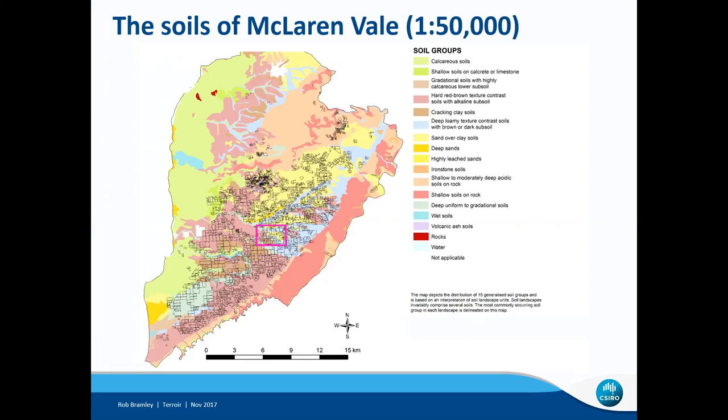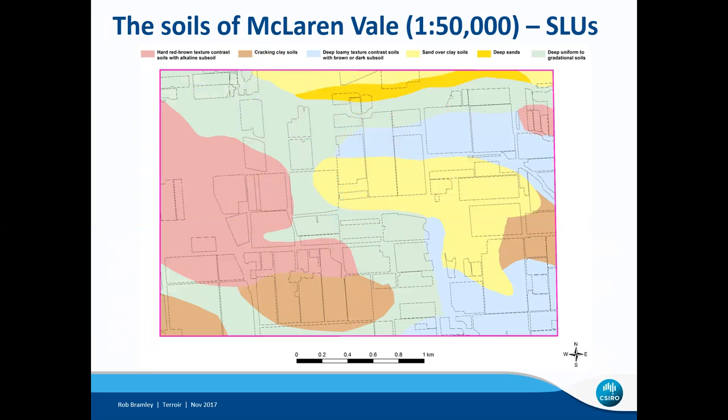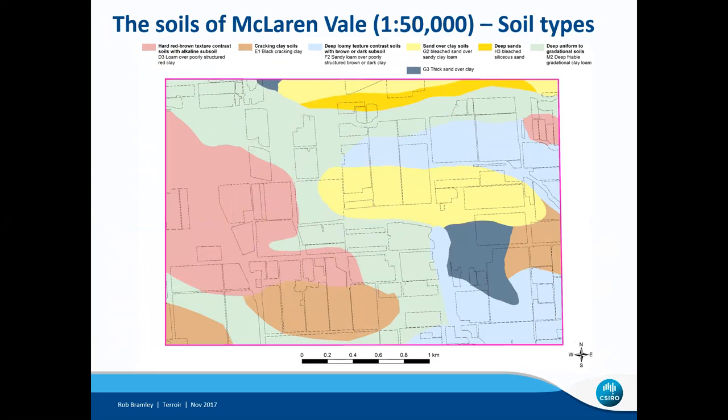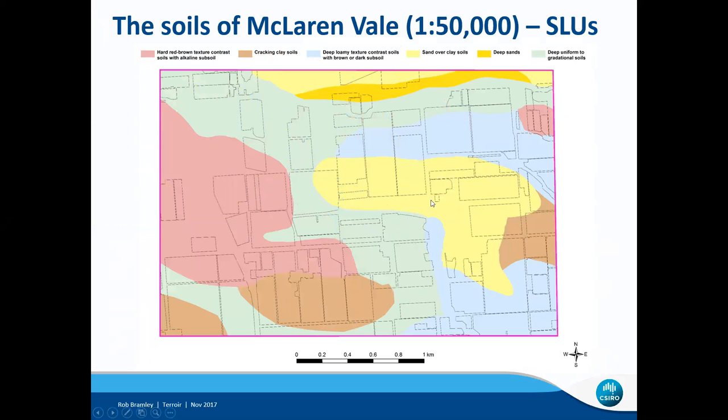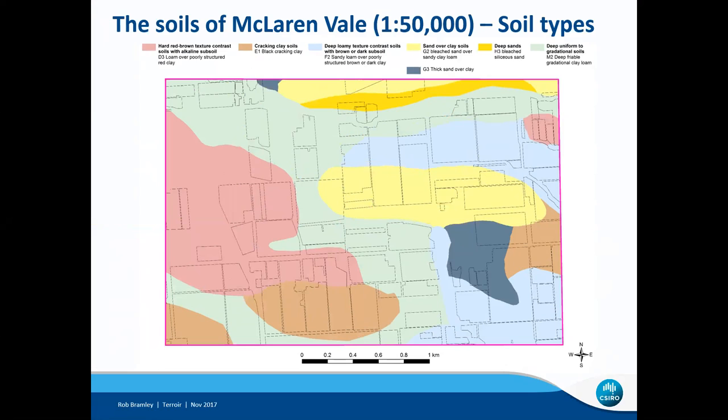Now zooming into that 5.2 square kilometre area, it's important to recognise that even though I've zoomed in, this is still a 1:50,000 soil survey. Within that area there are six soil landscape units visible. If we focus on what most people would call soil types, we end up with just a little separation around here. We've got sands over clay soils — this pale yellow area — and if we focus just on soil types, there's then an additional discrimination in this dark grey.